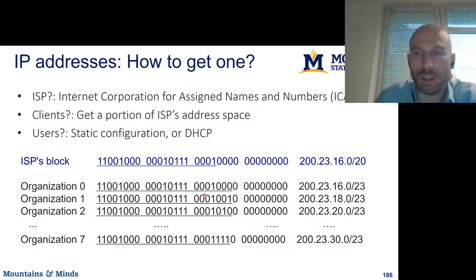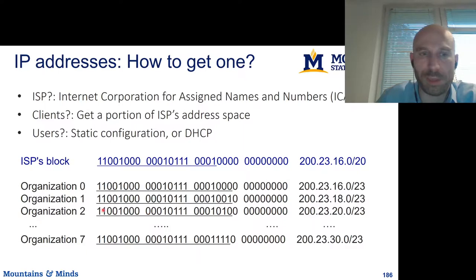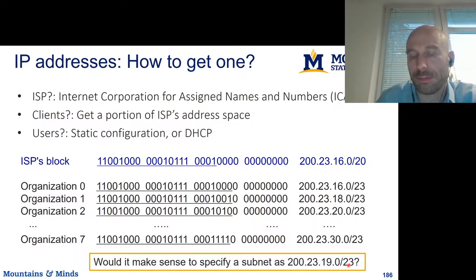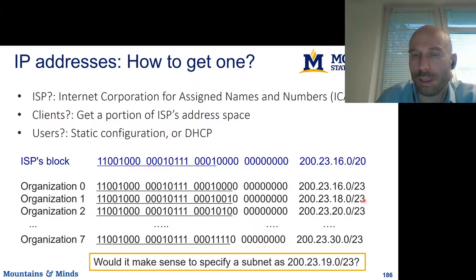If you're a client, you might use DHCP to get your own IP out of a /23 address space. You could ask: would it ever make sense to specify a subnet as 200.23.19.0/23? The answer is no. With /23, the last bit of the third octet is part of the free bits. If you put 19 there, that bit is flipped to 1 — but that's past the 23-bit boundary. So for a /23 address, the third octet has to be even: you can have 16, 18, or 20, but not 19 or 21.